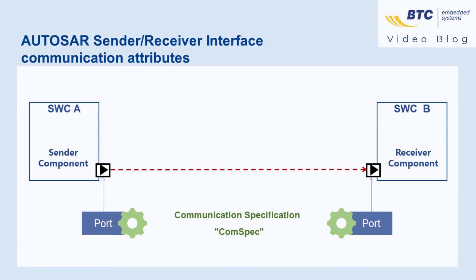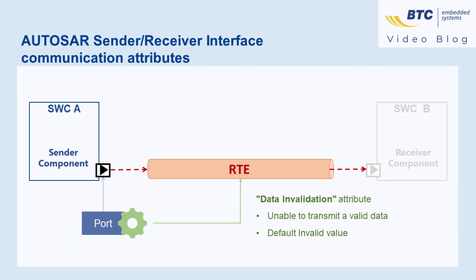There are a few things a sender component can manage on top of the transmitted data. A sender component may not always be able to provide valid data — for example, a sensor component which detects a sensor fault. In this case, it can use the data invalidation attribute to make the information available on the RTE and transmit an invalid value instead.